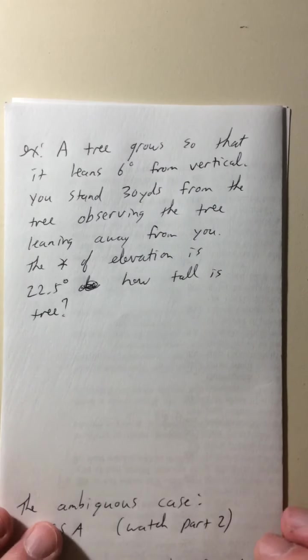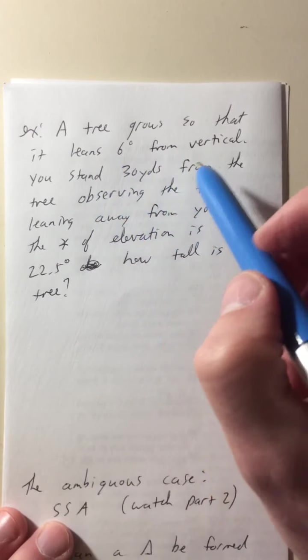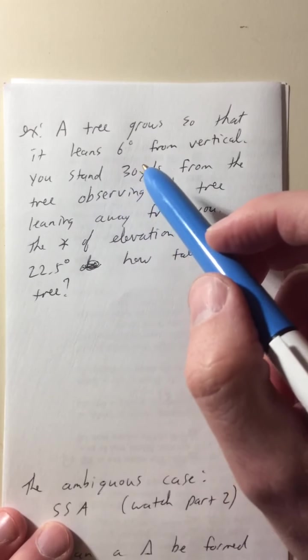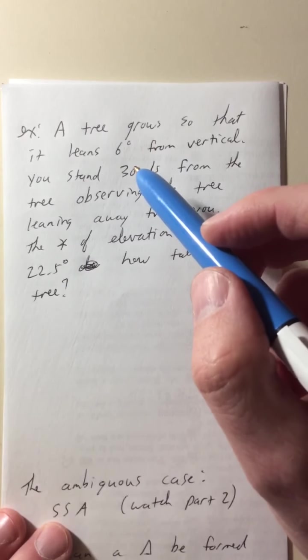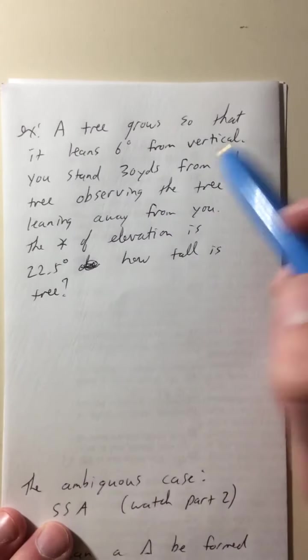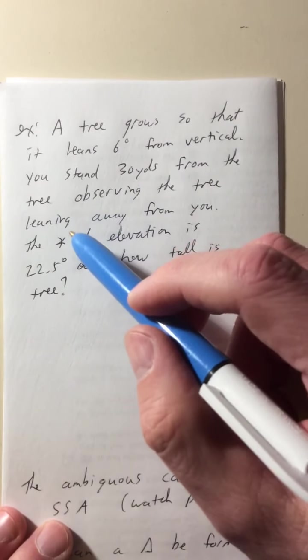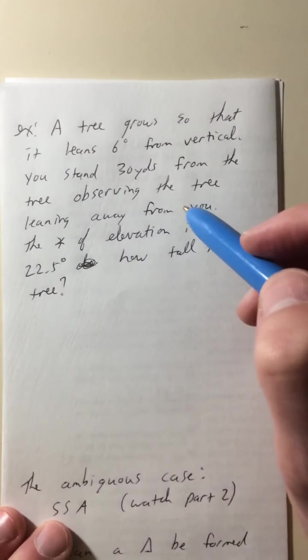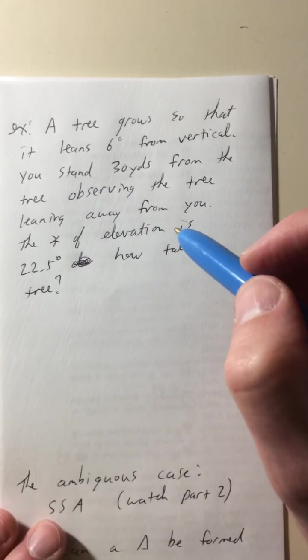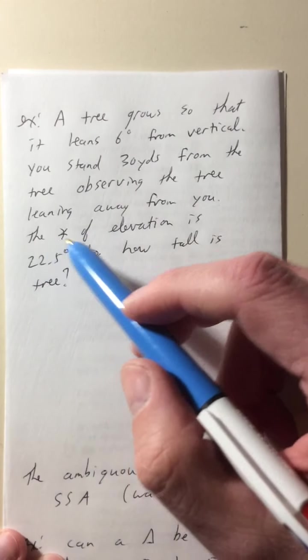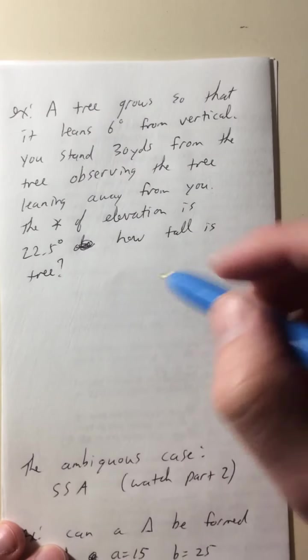So as I said, I'm not gonna have things drawn for you, so we're gonna have to figure them out. So a tree grows so that it leans six degrees from vertical. Let's say it was growing on a plane in Kansas, and the wind was blowing, and it's always blowing in the same direction, so the tree was leaning six degrees or something like that. Okay. So you stand 30 yards from the tree, observing the tree, leaning away from you, so you can imagine that the top of the tree is a little further away from you than the bottom of the tree. And the angle of elevation is 22.5 degrees. How tall is the tree?